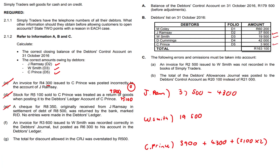A cheque for 8,350 originally received from J Ramsey in settlement of a debt of 8,500 was returned by the bank marked R/D, and no entries were made in the debtors ledger. J Ramsey still owes us 8,350. The cheque was for 8,350 and the settlement of the debt was 8,500. We apply the principle of prudence here — we rather overstate our expenses and understate our income, so we use 8,350 rather than 8,500 because it includes the discounted amount, keeping our accounting as prudent as possible.